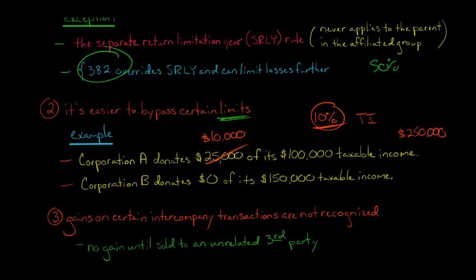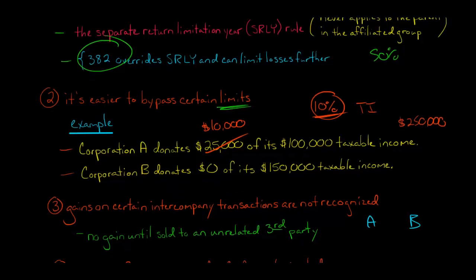A third advantage of having a consolidated, filing a consolidated return is when you have an intercompany transaction. Let's say we got Corporation A, we got Corporation B. And let's say that Corporation A has land with a basis of $100,000. And it sells the land to Corporation B, let's say for $150,000.